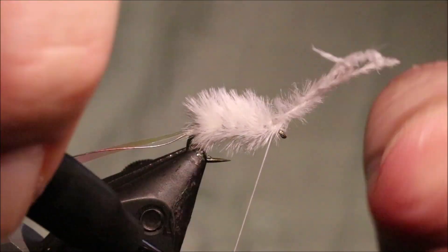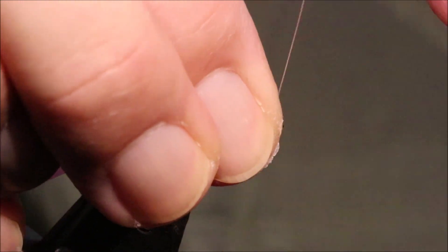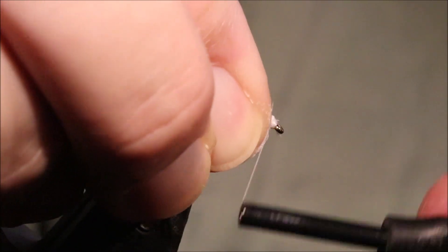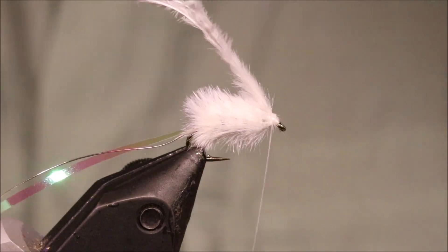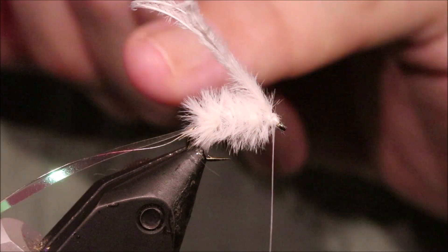You can let go of the ostrich, take a lock and turn the thread. Just sweep everything back. Take your thread back.